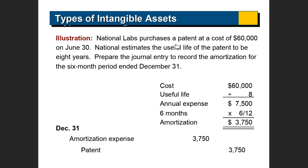For example, $60,000 was paid by National Labs and the useful life of the patent is eight years. The annual amortization expense is going to be $7,500. If it is for half a year — for example they started partway through the year — the amortization is going to be for half of that year. There is no other method — only straight line. Whatever the cost is, divide it by the number of years.